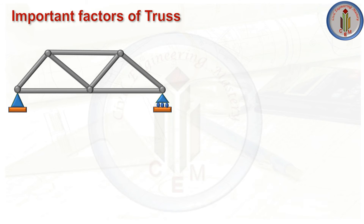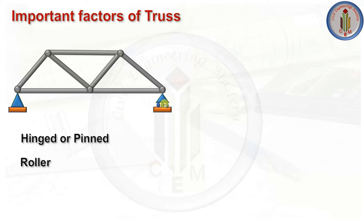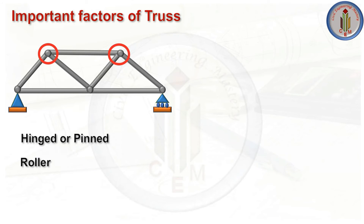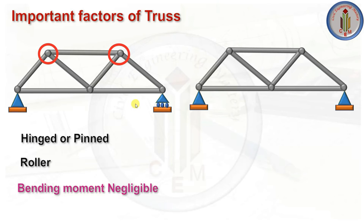Next, let's see the support conditions for trusses. Trusses can have a hinged (or pinned) support and a roller support. For more details on support conditions and how we get support reactions, I have uploaded a separate video — the link is in the description box. Usually the truss joints are rigid by welding in the field; however, the analysis is carried out as though they were pinned, since the bending moment induced in truss joints is negligible.